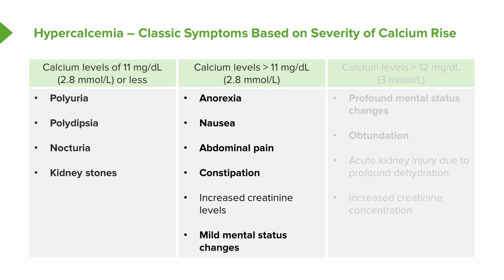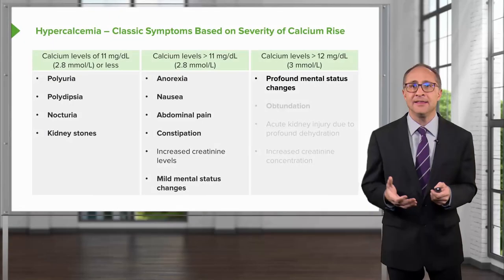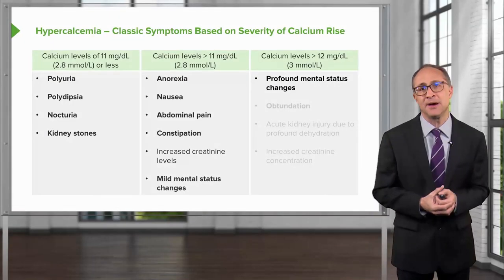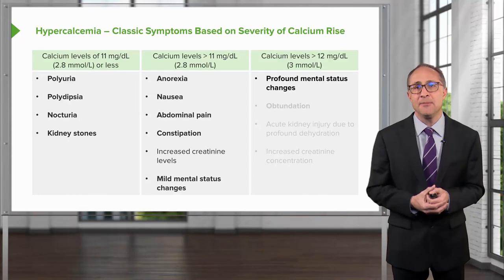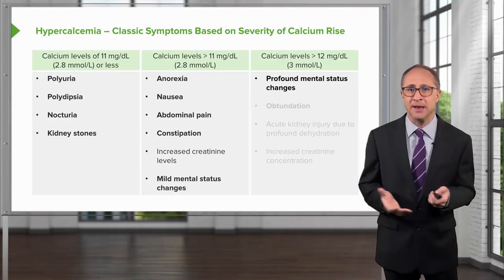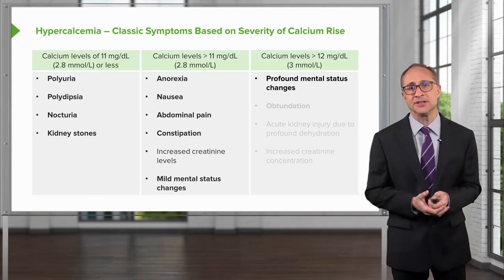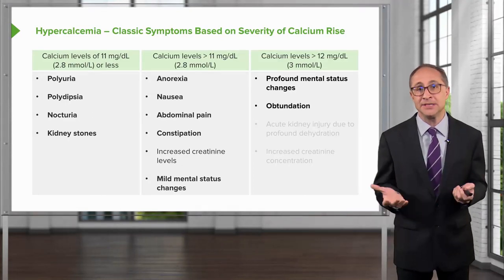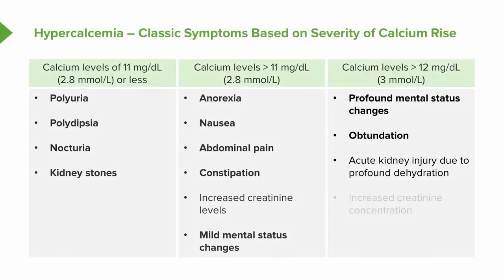This can be followed by mild mental status changes. As calcium increases above 12, patients present with profound mental status changes. They may be obtunded, and kidney injury due to profound dehydration may occur, with a further increasing creatinine level at this stage.